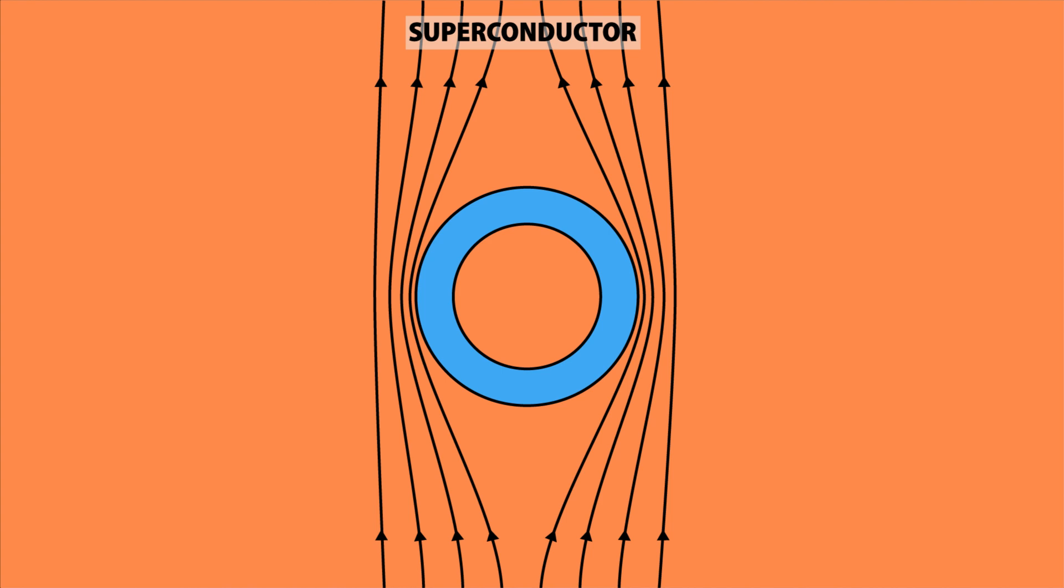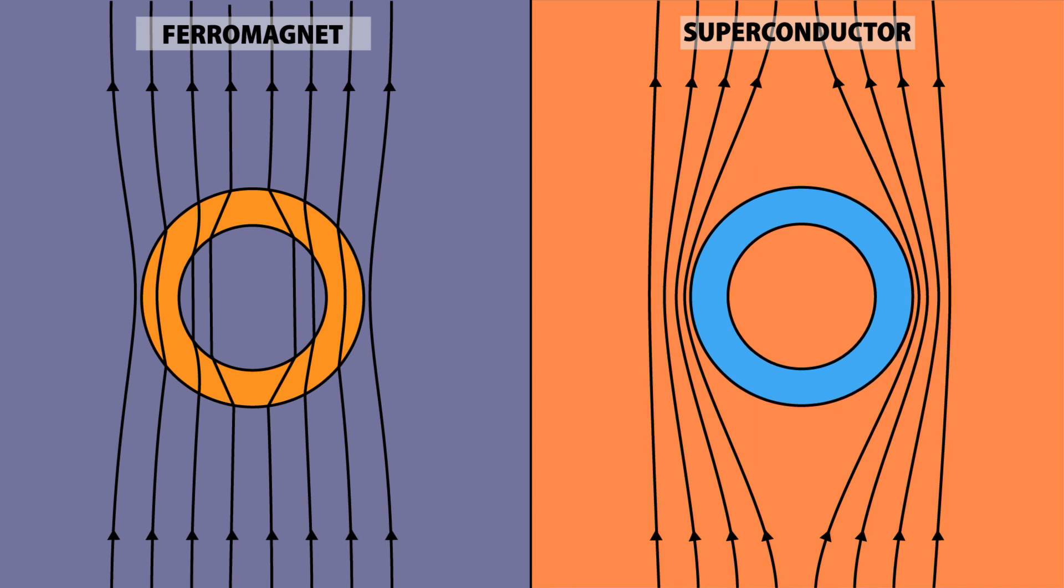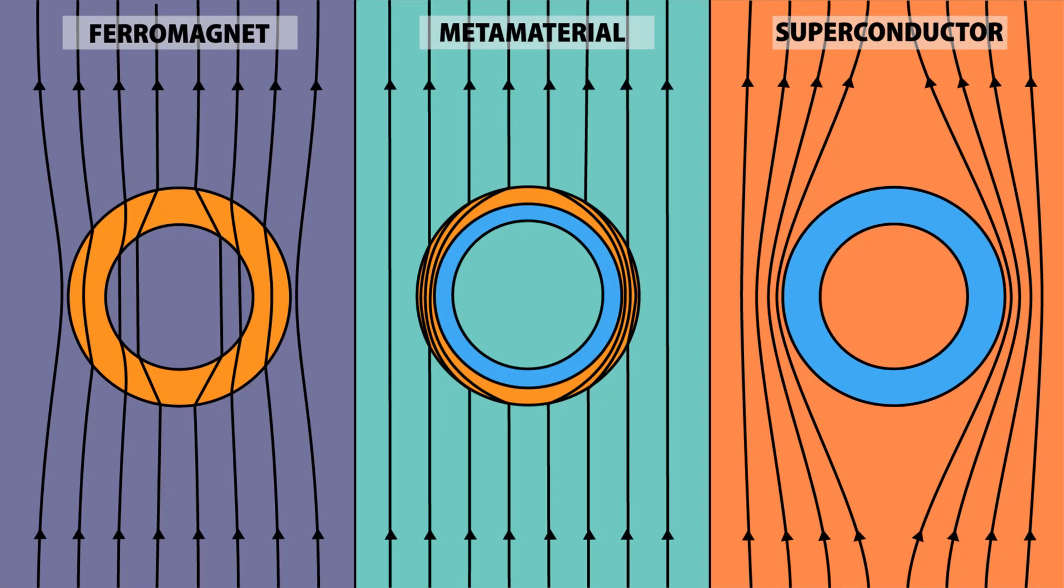They then enveloped this superconductor in a ferromagnetic material. This bilayer structure is able to channel the magnetic field lines into the ferromagnetic layer, where they exit again at the same location as if there was nothing there.